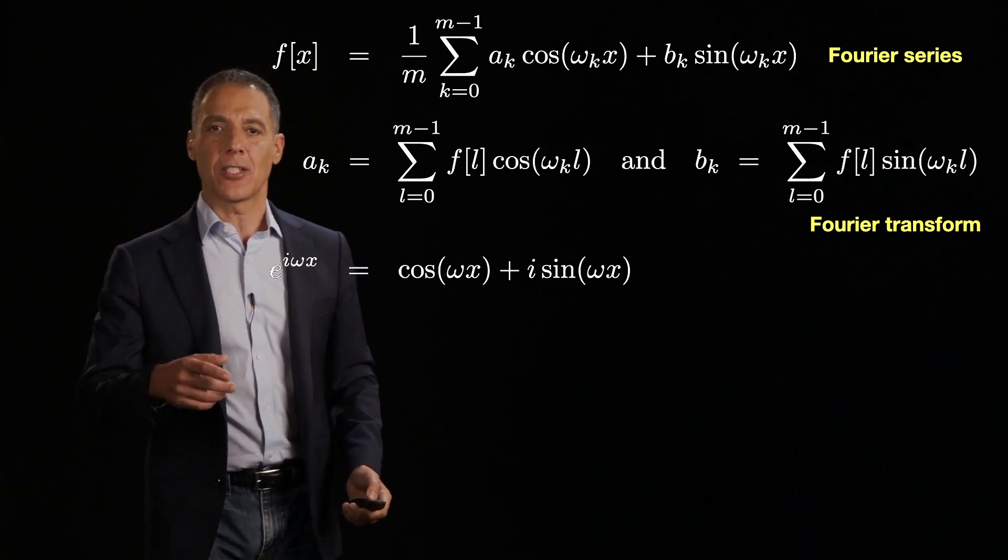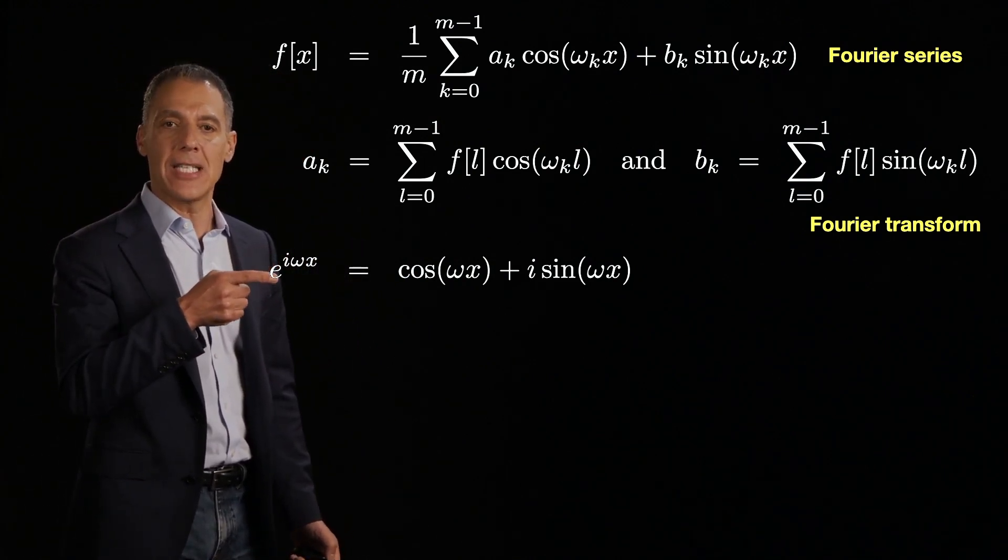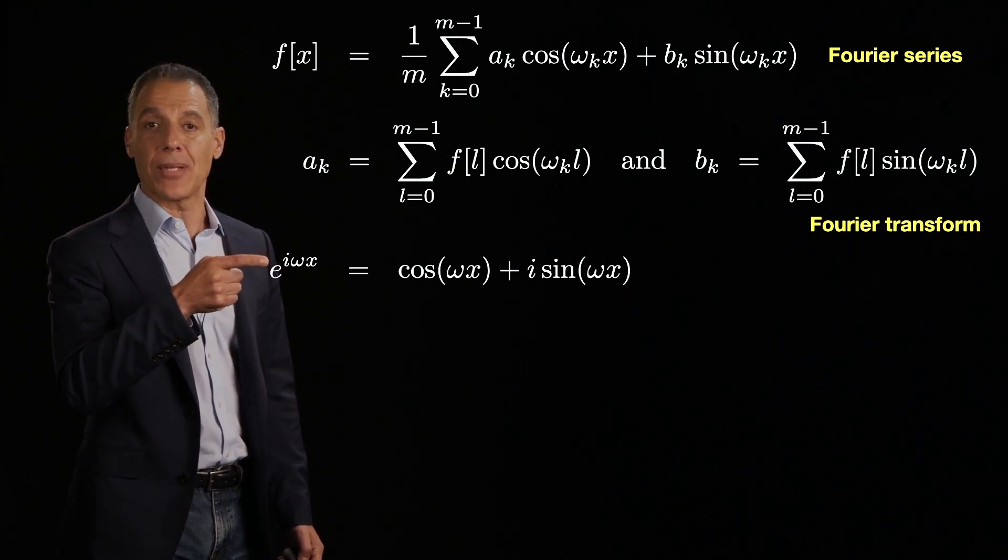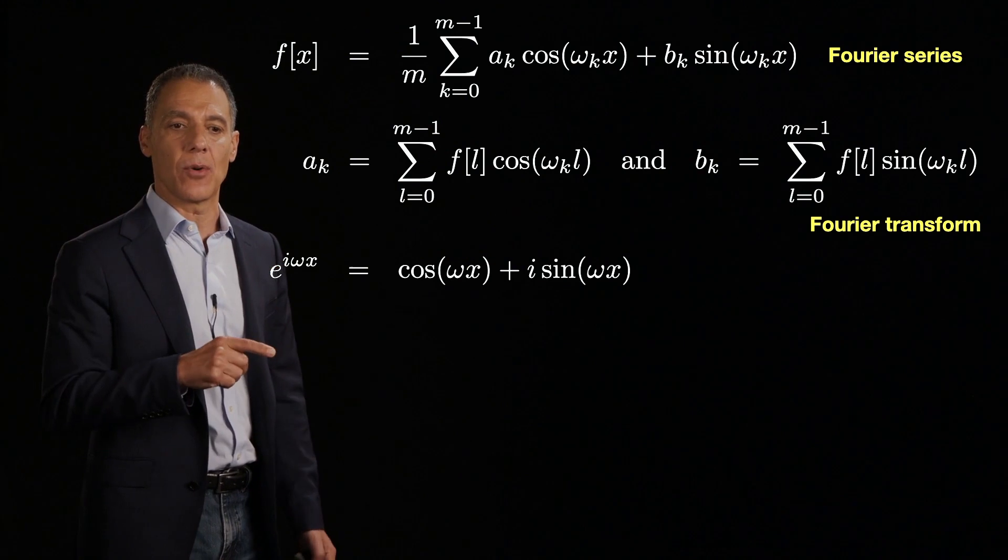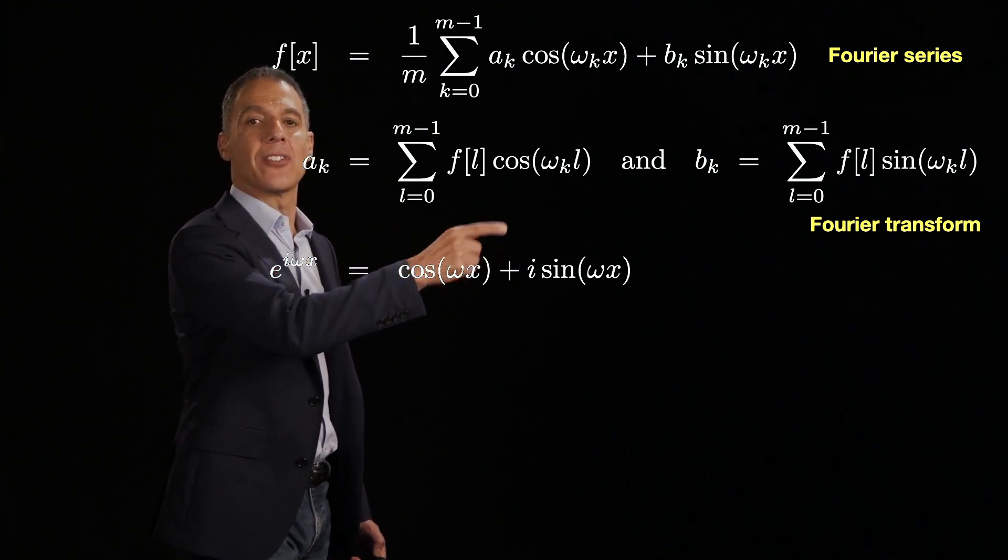It's just a notational convenience. So what is the complex exponential? Arguably one of the most beautiful equations in mathematics. e^(iωx), where i is the complex value, i square root of negative one.